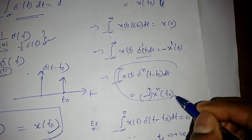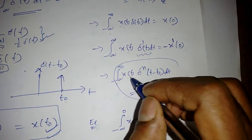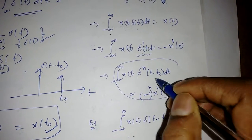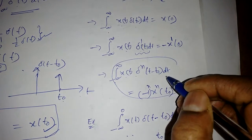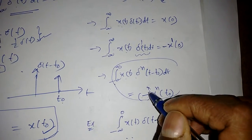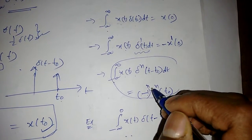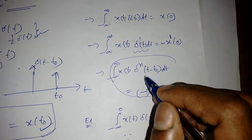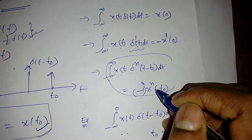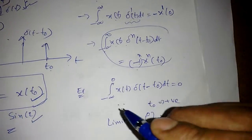Generalizing this expression: the integral from minus infinity to infinity of x(t)·delta^(n)(t - t₀) dt equals (-1)^n · x^(n)(t₀). So if n is even it becomes positive, and if n is odd it becomes negative x^(n)(t₀).